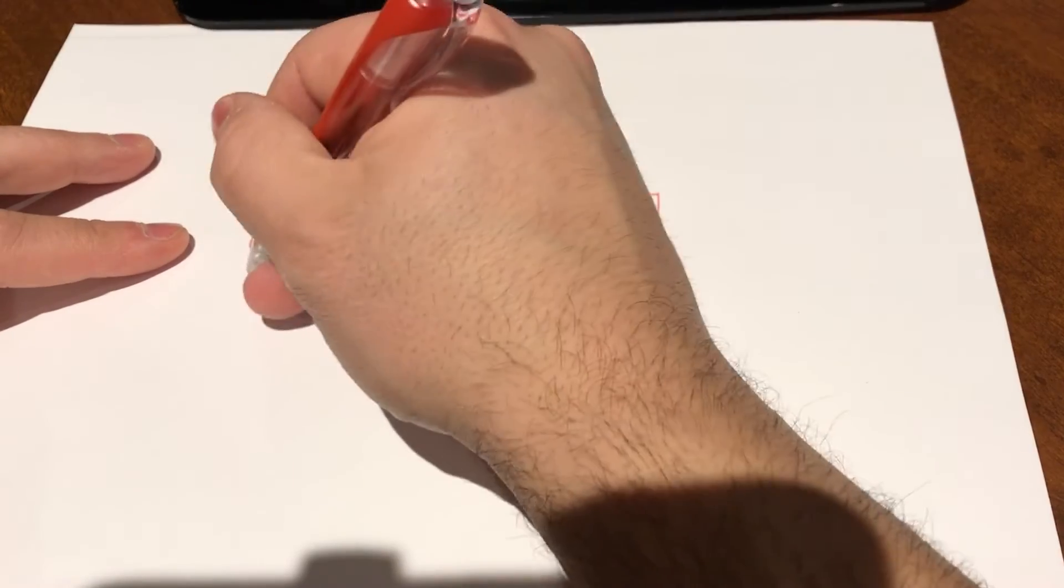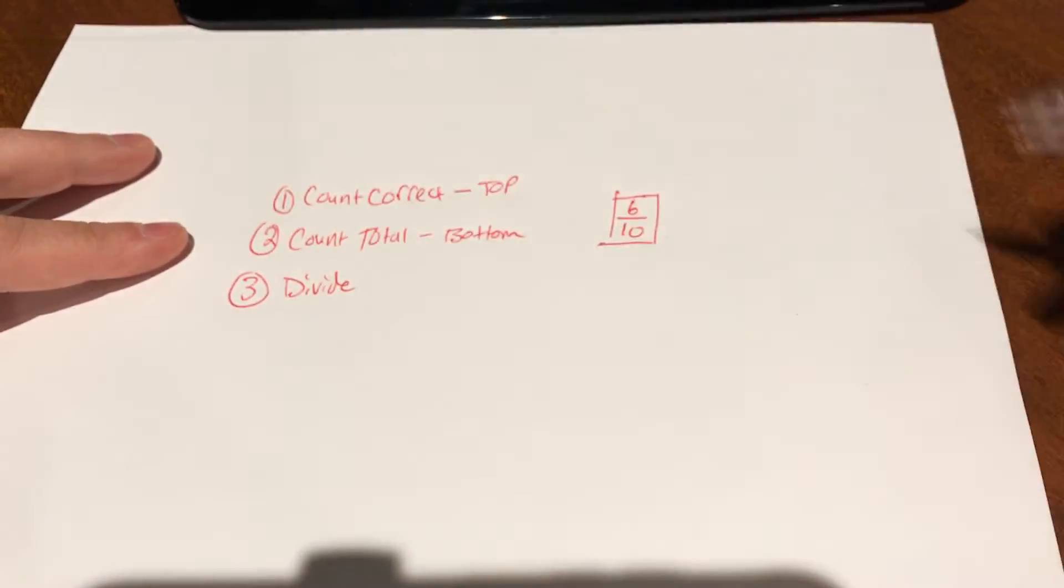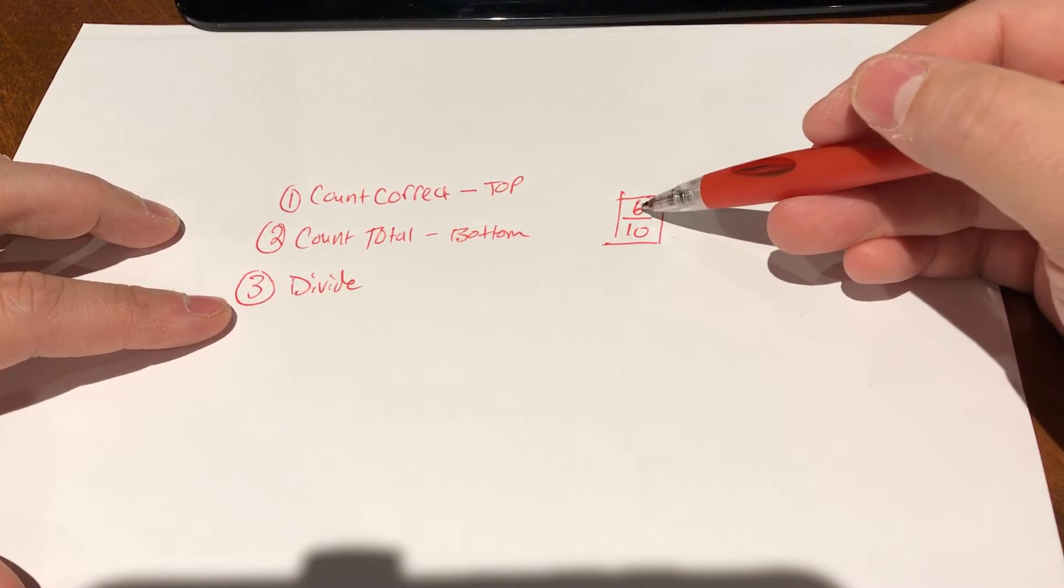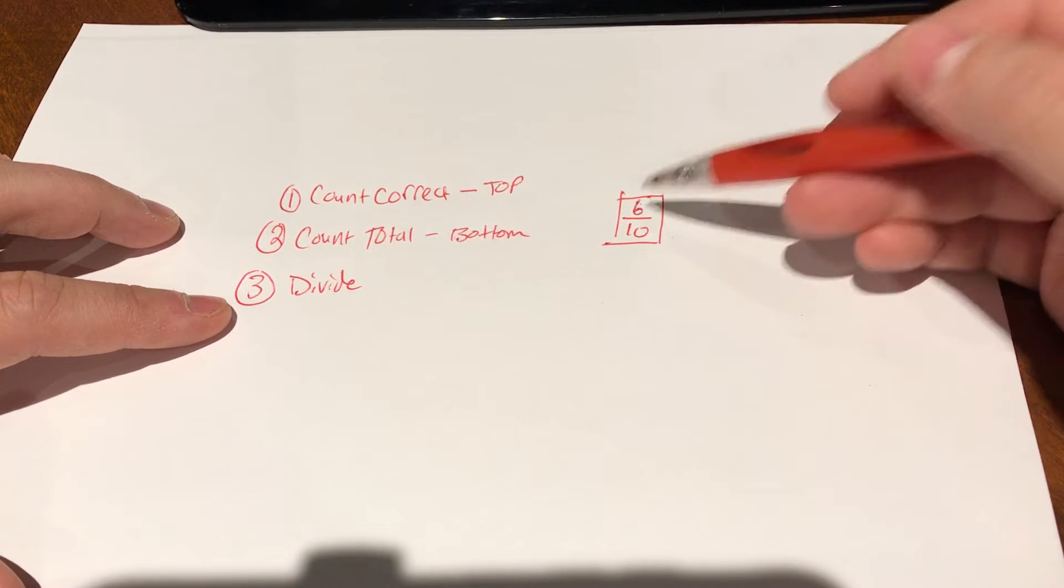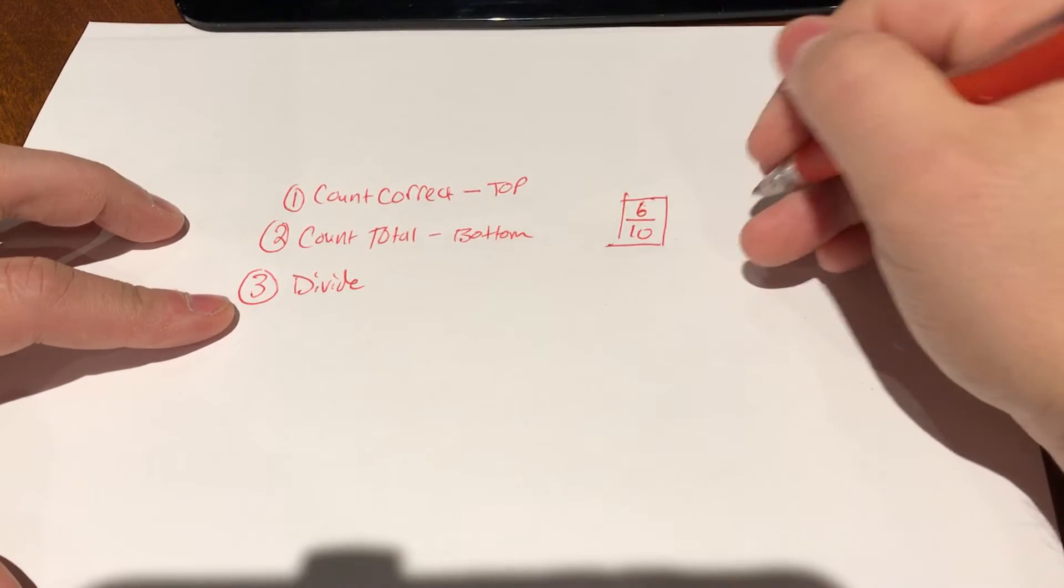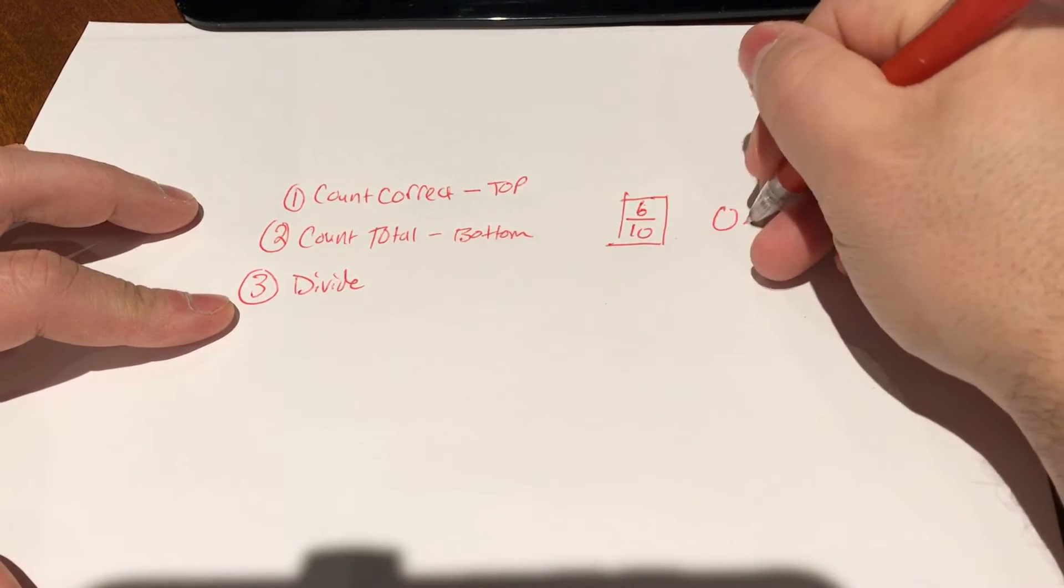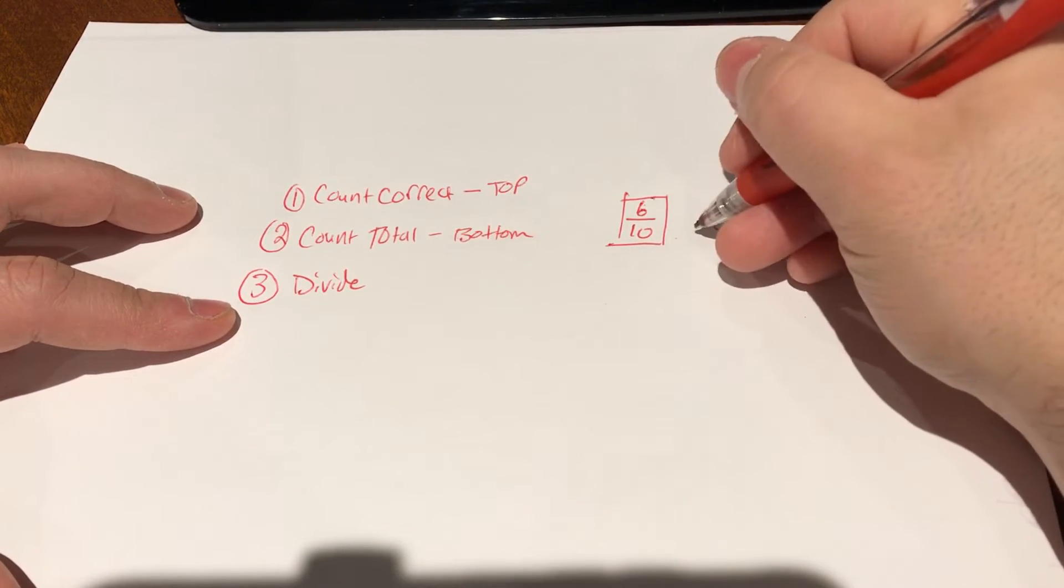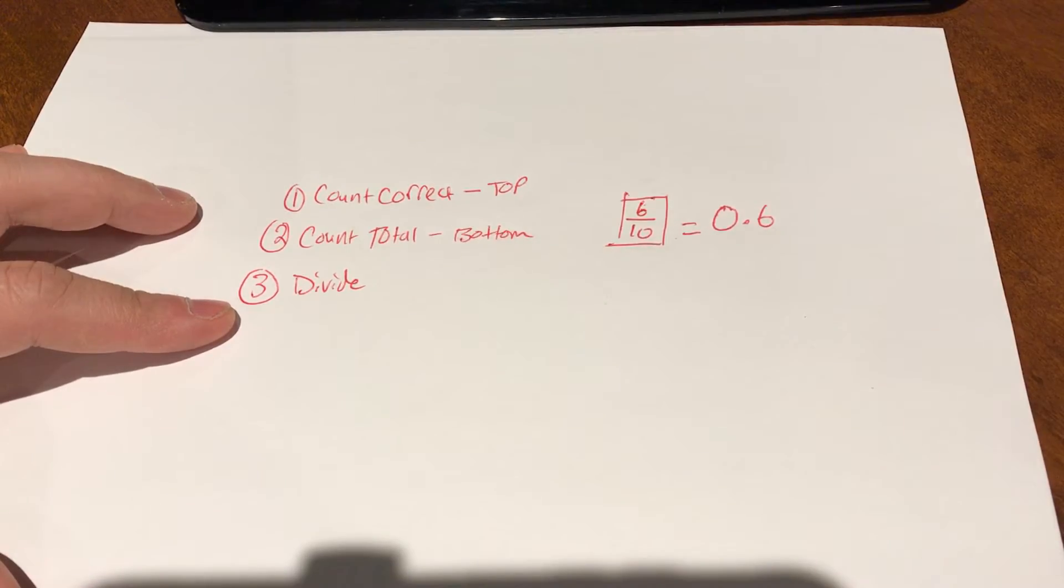Now step number three is going to divide the top number by the bottom number. So you're going to divide the number of correct answers that you've received by the bottom number. So six divided by 10 is going to equal 0.6. So that is step number three, six divided by 10 is equal to 0.6.